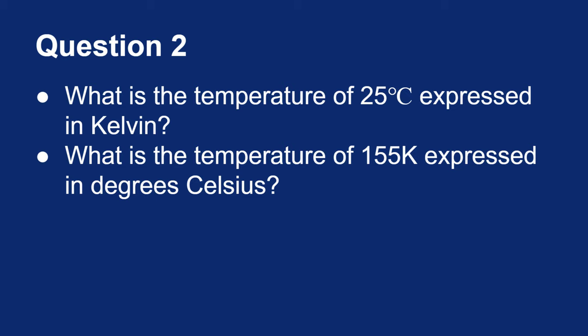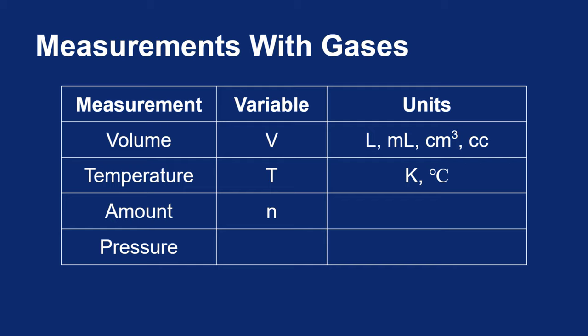And if I have a temperature of 155 Kelvin, what is that in Celsius? Well to go from Kelvin to Celsius, you have to subtract 273, so that would be equivalent to negative 118 degrees Celsius. Again, negative Celsius is okay. Negative Kelvin is not. Okay, so that gets us halfway through our measurements.